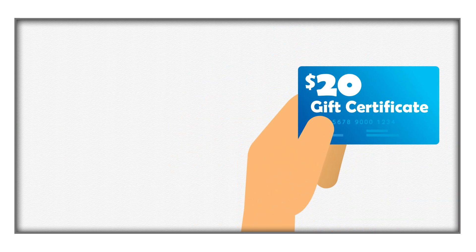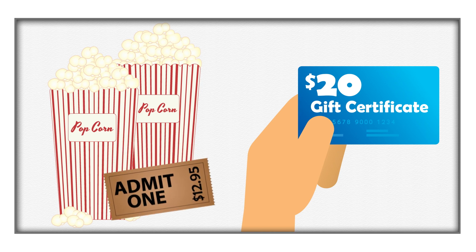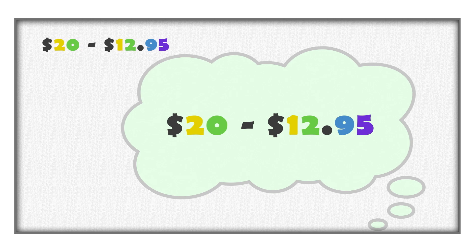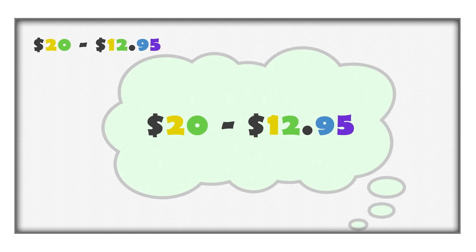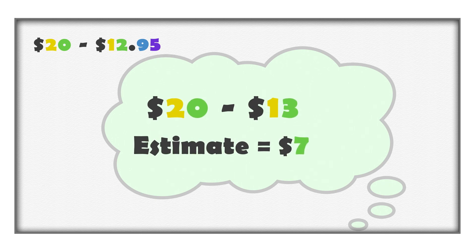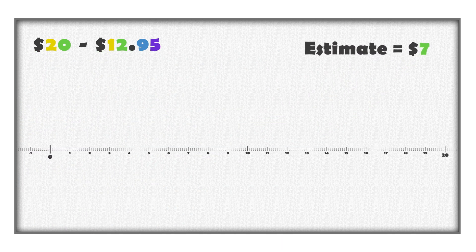Imagine that you have a $20 gift card for a movie theater. A ticket to the movie costs $12.95. How much money will you have left on your gift card? We can estimate the answer. $12.95 is approximately $13. If we spend $13, there should be approximately $7 left on the gift card.